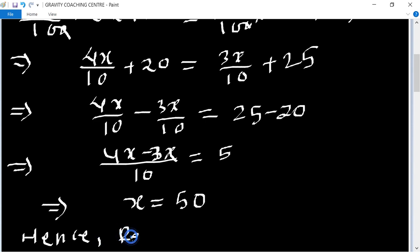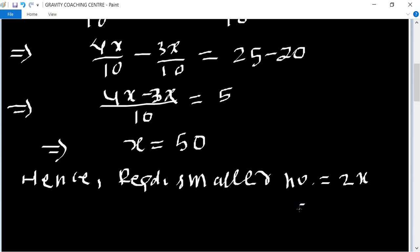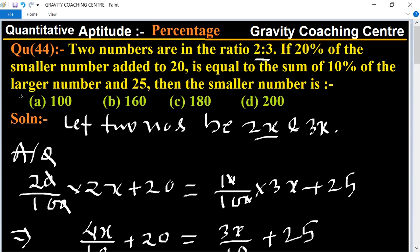Required smaller number equals 2x, which is 2 times 50, equals 100. This is the required answer, so option A is the right answer.